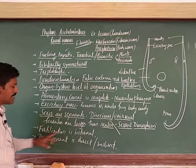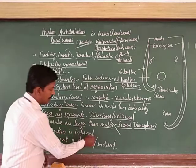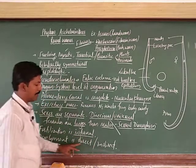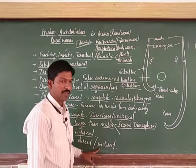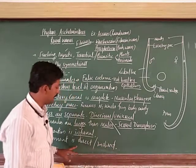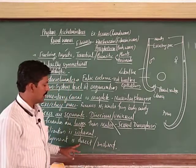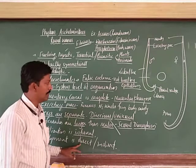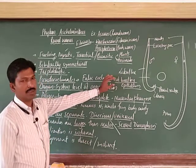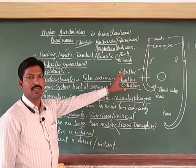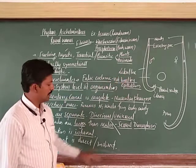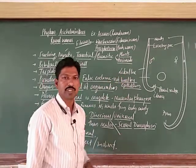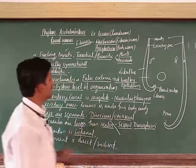Fertilization is internal, and development may be direct or indirect. Even some previous stages appear like very small worms, which may develop into adults. Indirect development is with the presence of larval stages. These are the points to remember.